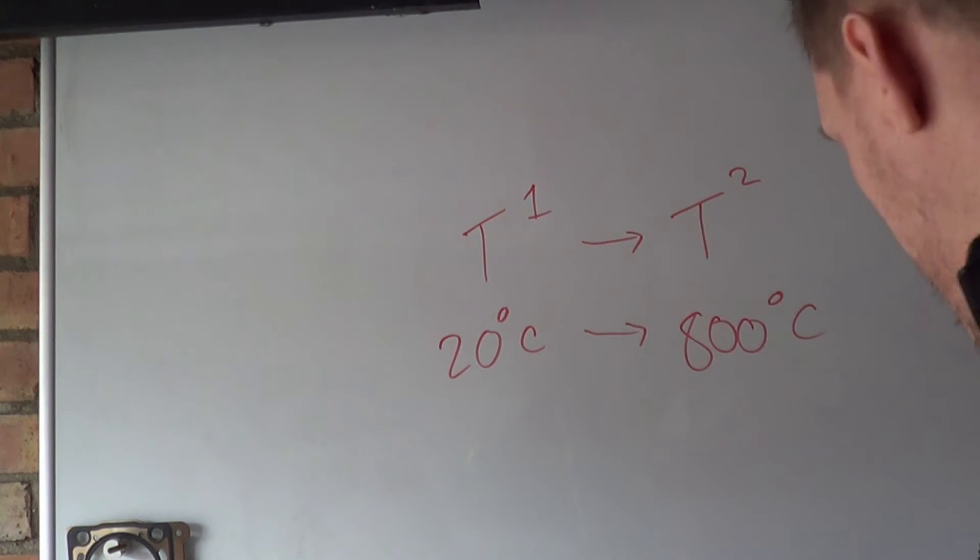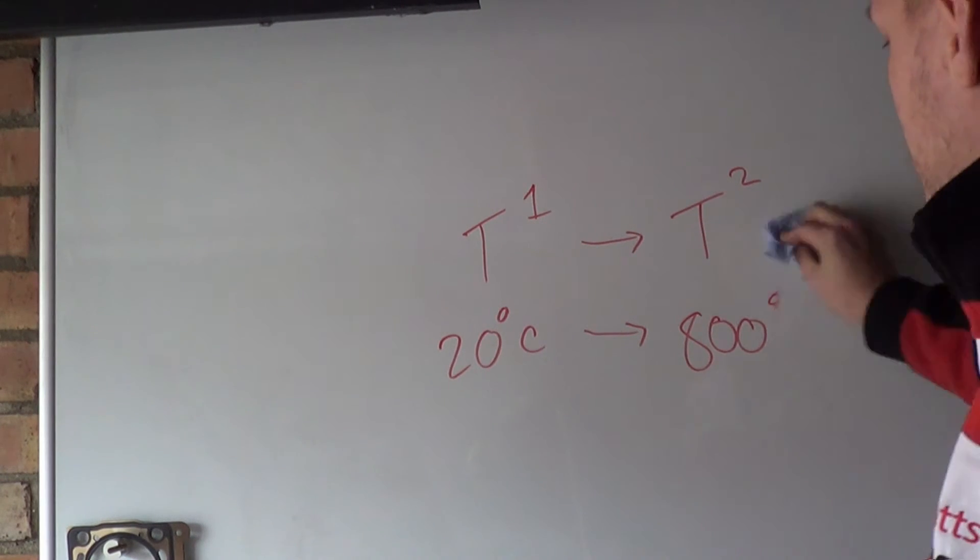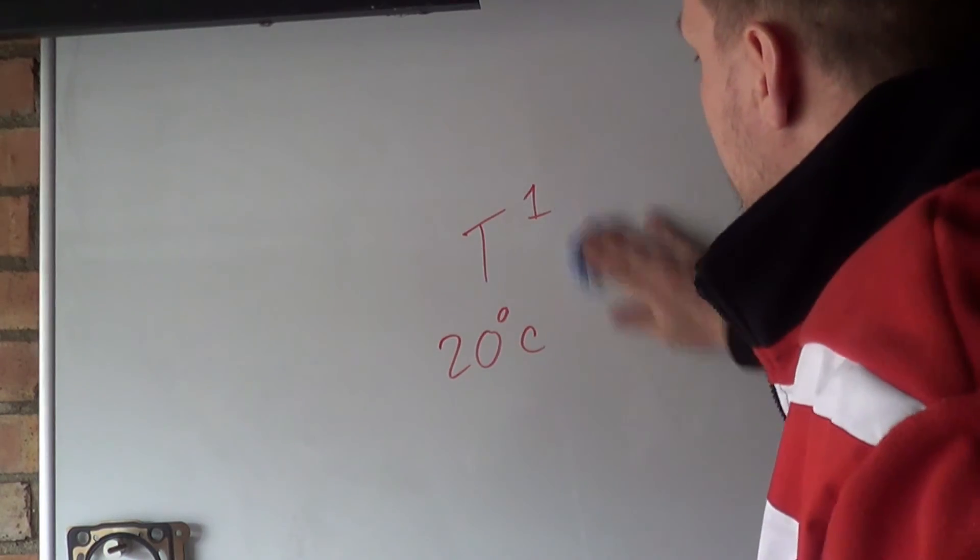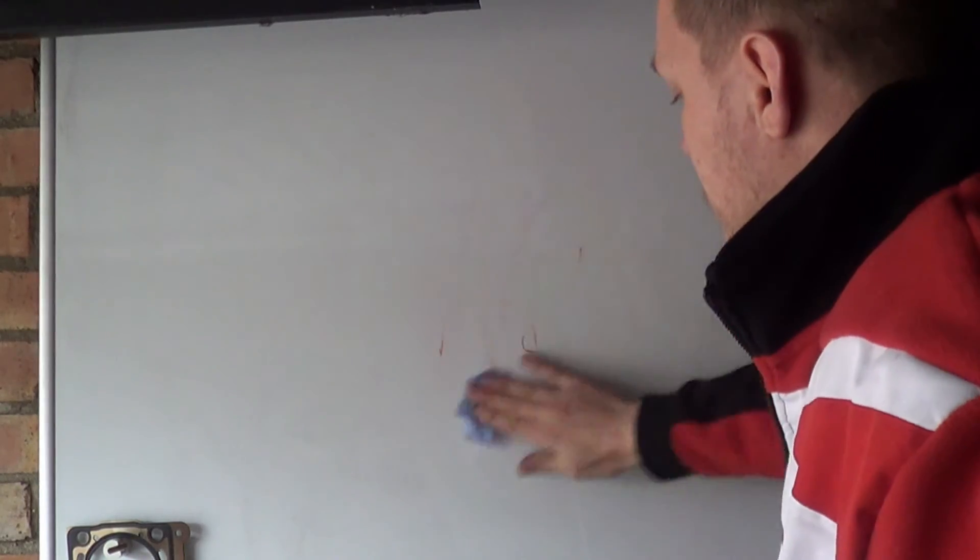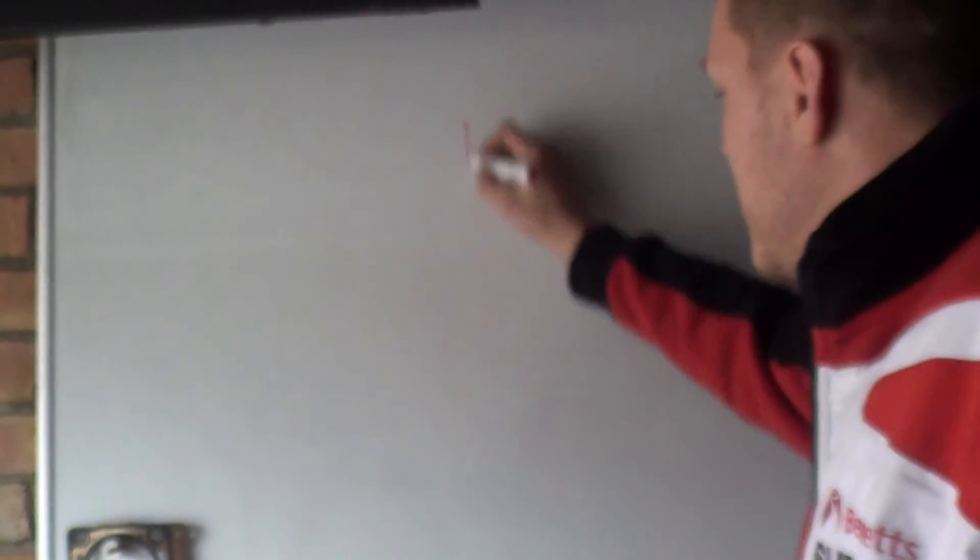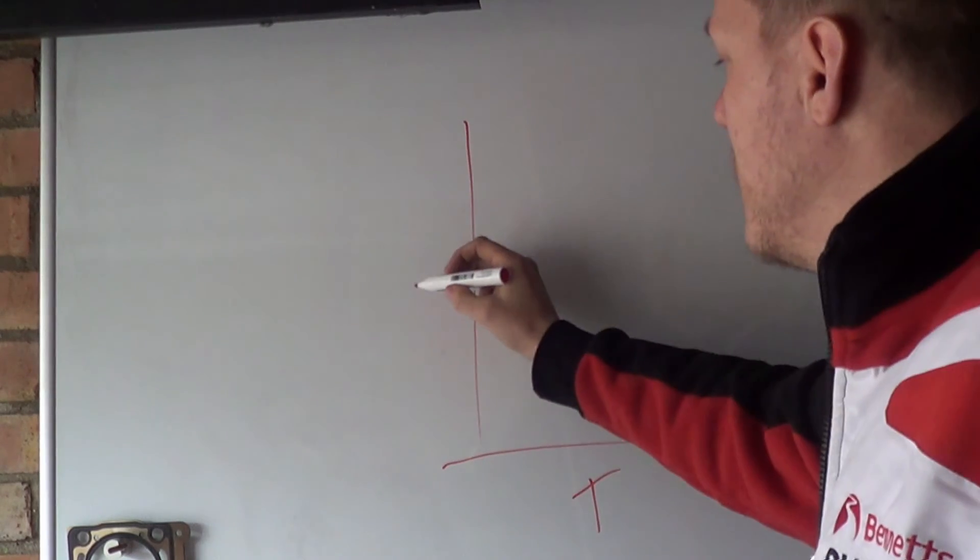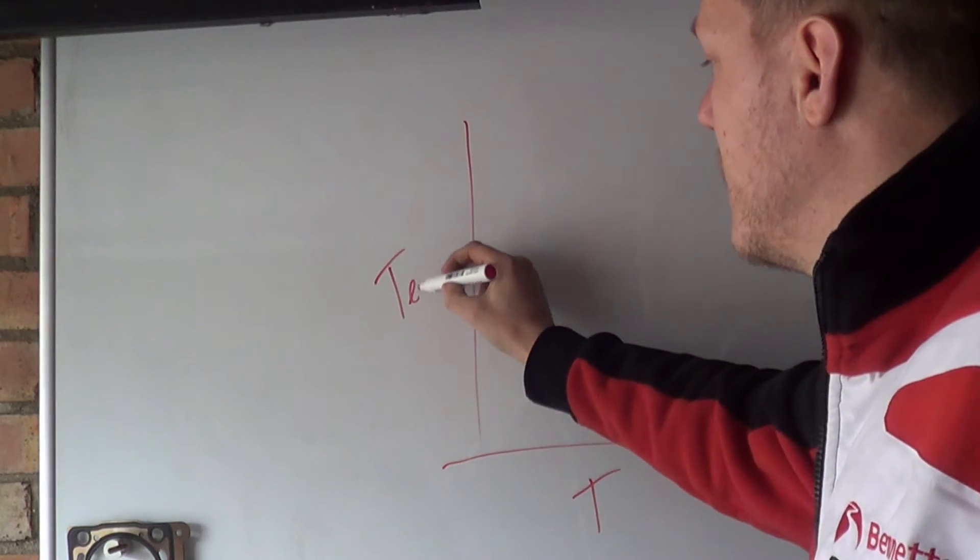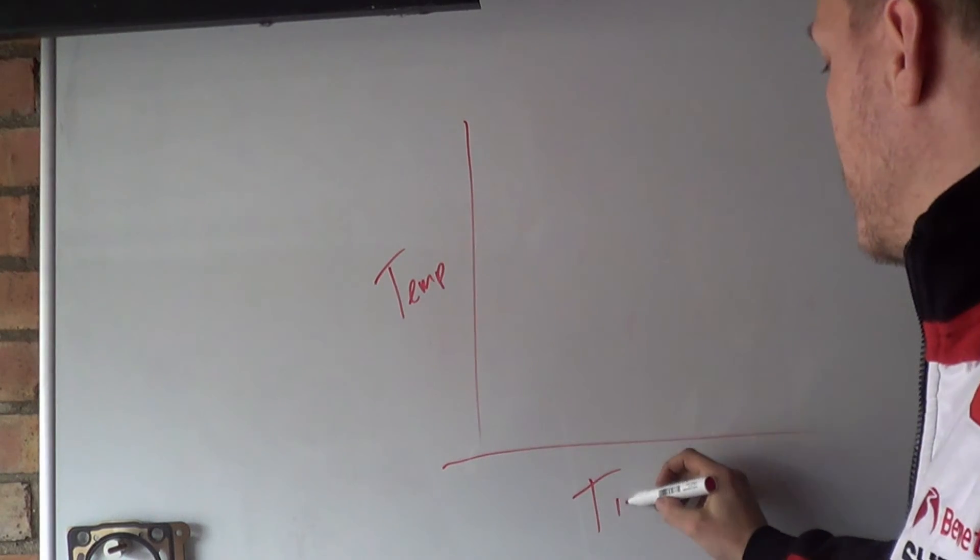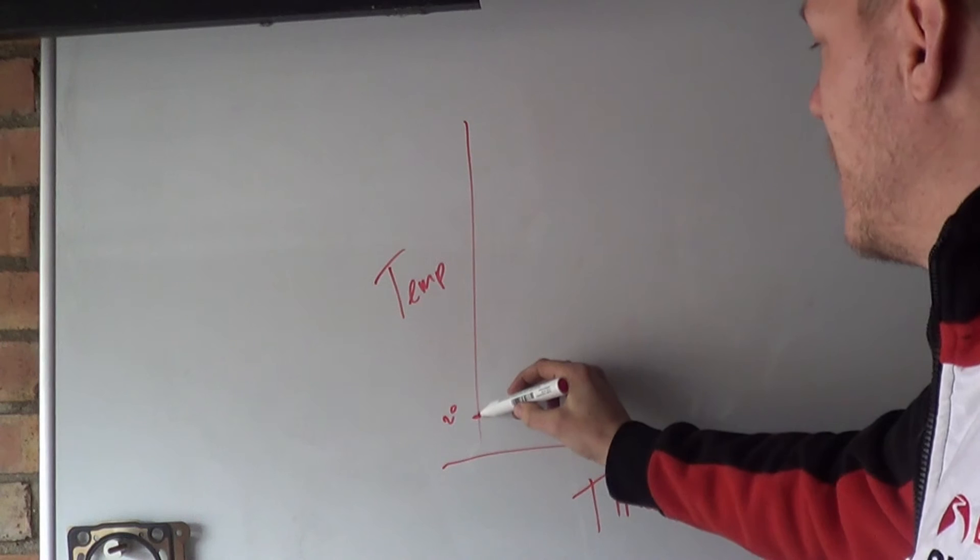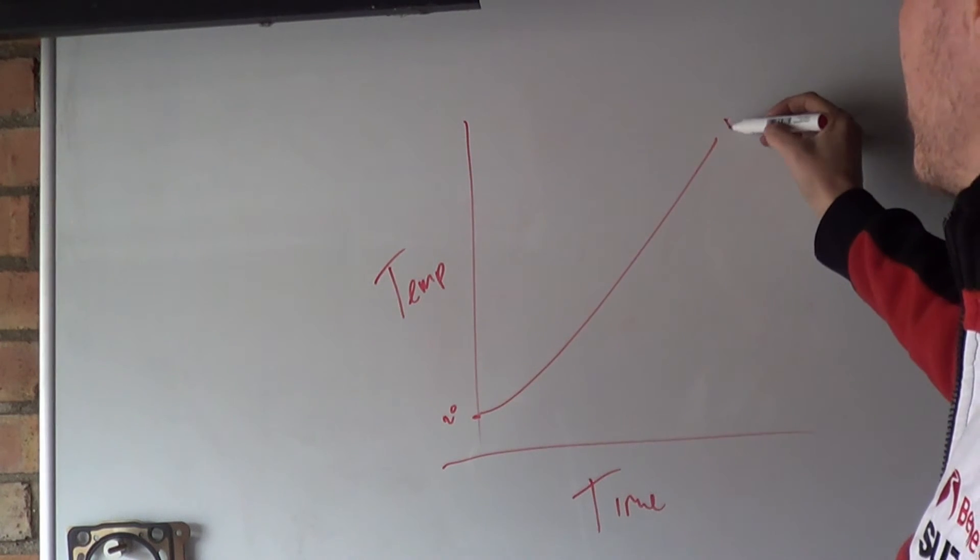So if you plot that on a graph, and I know here comes the dreaded graphs, but it's really simple to understand. So if we plot this on a graph, we've got time at the bottom. We've got temperature. We've got time. And then we start it down here at 20, and then we ramp up to 800.